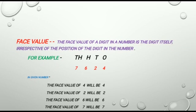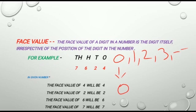For example, take any numbers like 0, 1, 2, 3, and so on. Here the face value of 0 will be 0, the face value of 1 will be 1, the face value of 2 will be 2, and the face value of 3 will be 3, and so on.